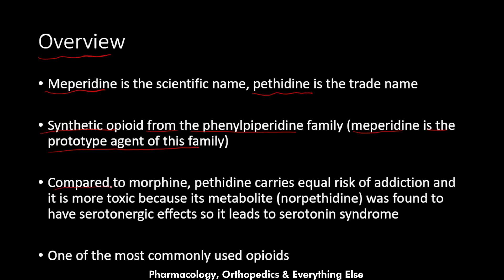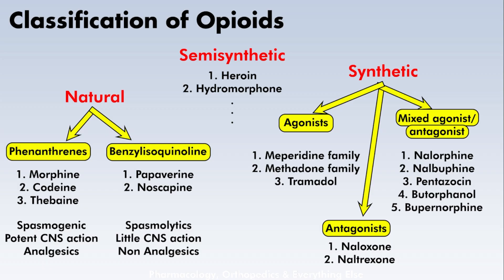Compared to morphine, pethidine carries equal risk of addiction and is more toxic because its metabolite, norpethidine, has serotonergic effects and may lead to serotonin syndrome. So in comparison to morphine, it has the same risk of addiction, is actually more toxic due to serotonin syndrome risk, and is one of the most commonly used opioids.